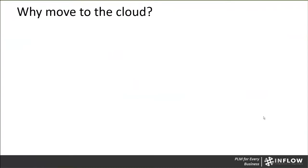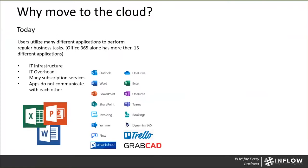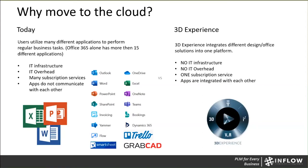One of the questions I get most often is: why move to the cloud? The best way I've found to explain that is to investigate what we're doing today versus what the cloud has to offer. Today, we are using many different applications — Microsoft Office 365 alone has more than 15 different apps. We also use things like Smartsheet, GrabCAD, Trello, communication apps — all of these require large IT infrastructure and IT overhead. Many are paid subscription services, and the most important thing is they don't really communicate well with each other.